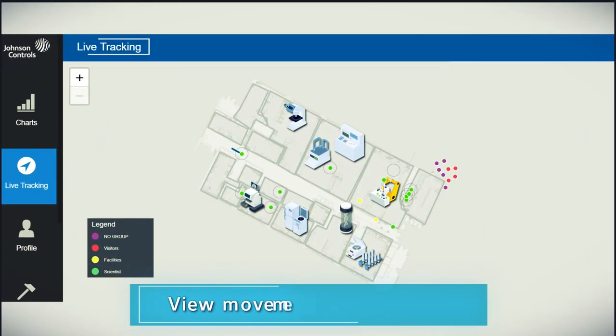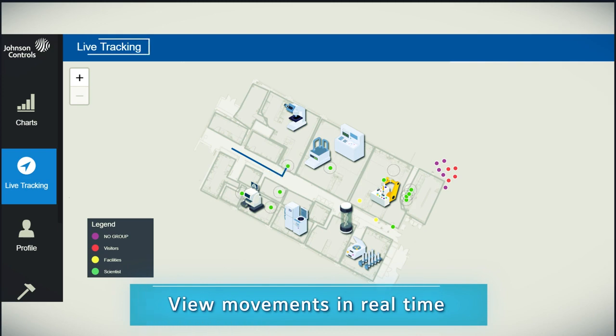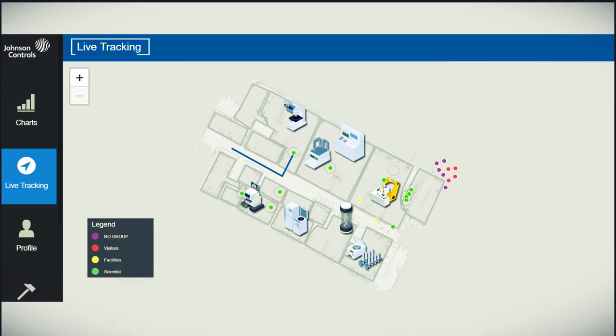With real-time location tracking, eliminate time spent searching for commonly used mobile assets, measure areas of collaboration between different teams of scientists, and identify contamination risks by receiving alerts if a scientist moves between lab areas.